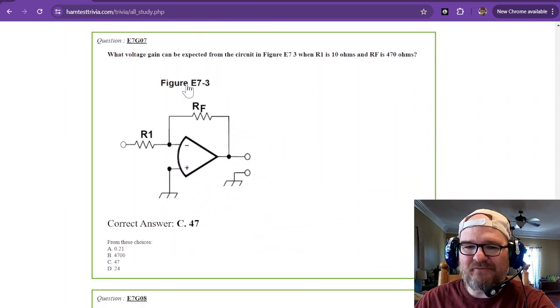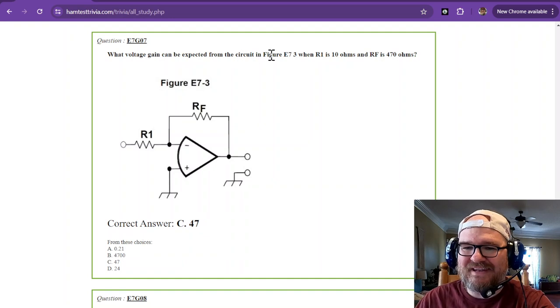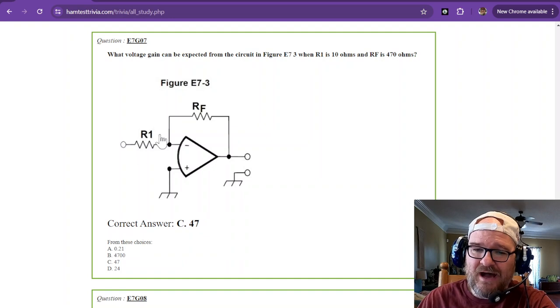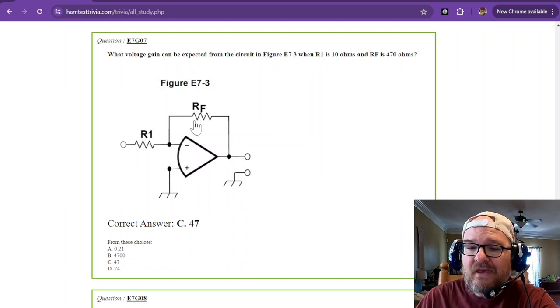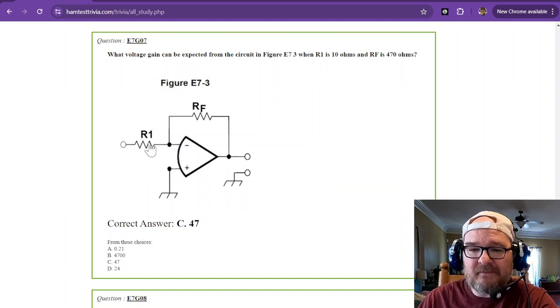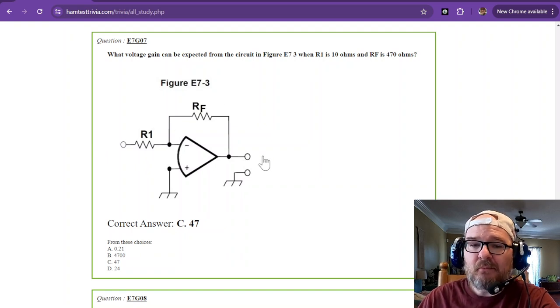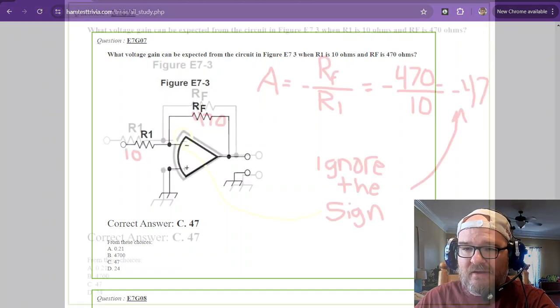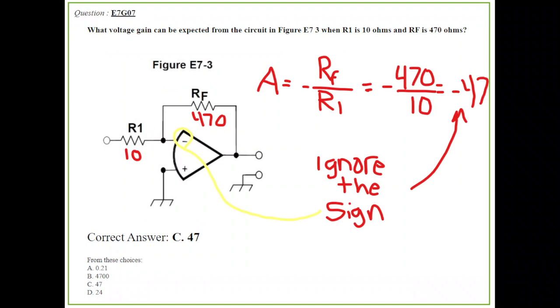What voltage gain can be expected from the circuit in figure E7-3 when R1 is 10 ohms and RF is 470 ohms? This is R1 or your input. This is your feedback. I don't know why they called it R1. When I did this in school, this was the RI and RF. This is an inverting technology. So, it's going to invert. Whatever comes in, the inverse is coming out. But for gain, ignore it. For gain, ignore it.